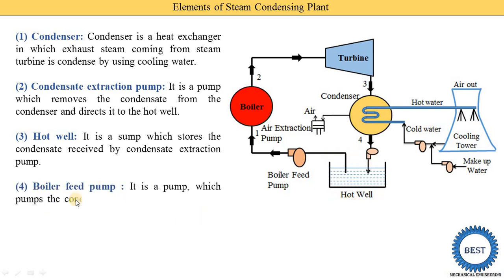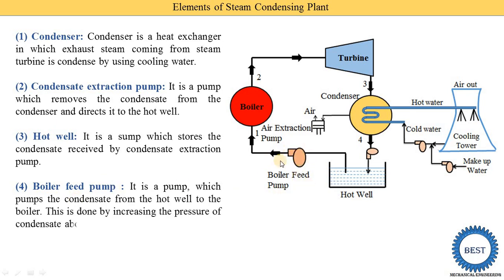The fourth component is the boiler feed pump. This pump pumps the condensate from the hot well to the boiler. The function of the boiler feed pump is to supply the water from the hot well to the boiler by increasing the pressure of the condensate above the boiler pressure.